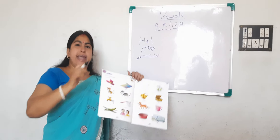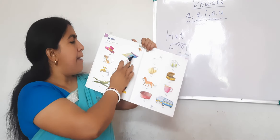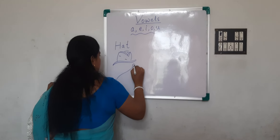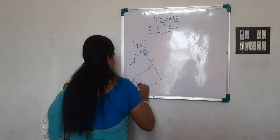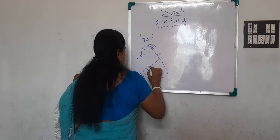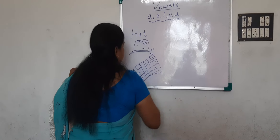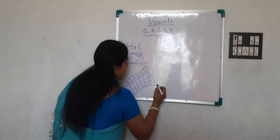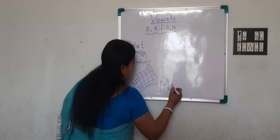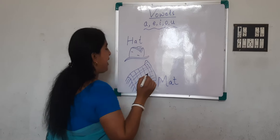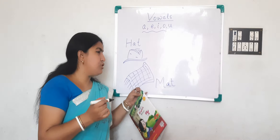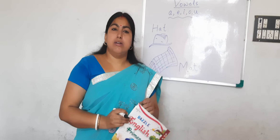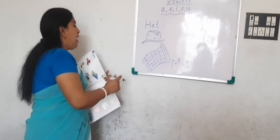Now come to the next picture. What is the next picture? That is a mat. Can we draw it here? Look — it's a mat. What is the spelling of mat? M-A-T. Mat. We use a mat to sit on. You place it on the floor or on the roof of your house. This is the mat.